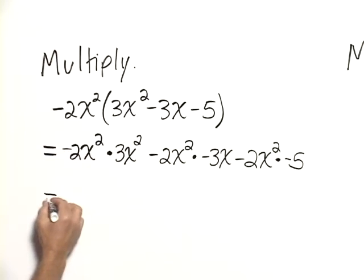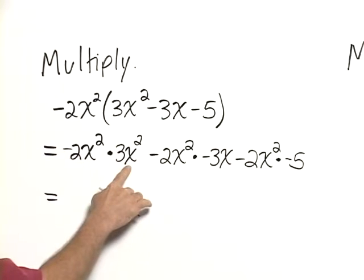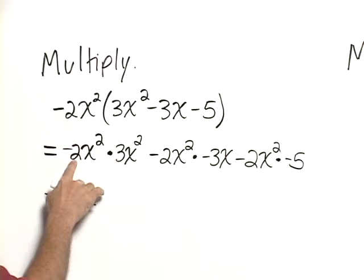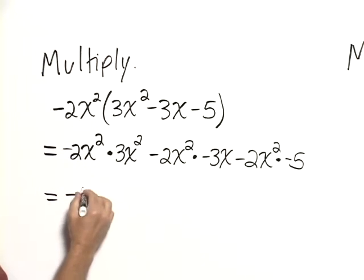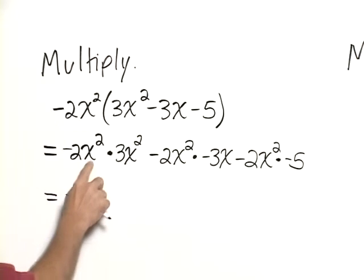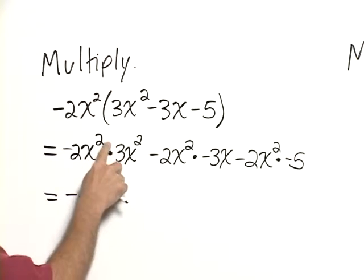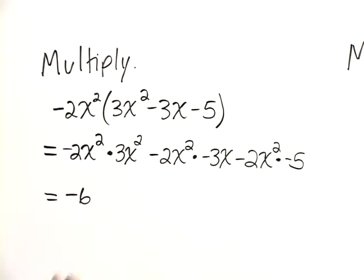Next, within each of these products, we multiply the constants together. Negative 2 times 3 is negative 6. We multiply the variables together, which means that we add the powers, so this would be x to the fourth.